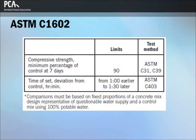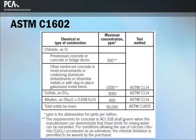Water of questionable suitability, including non-potable water or water from concrete production operations, can be used in concrete if it is qualified by requirements shown in the table. These requirements evaluate the impact of the questionable water on strength and setting time of concrete. ASTM C1602 includes optional limits for chemistry and total solids content by mass in the combined mixing water, which must be invoked in project specifications or purchase orders. The standard also establishes minimum testing frequencies to qualify mixing water, with more frequent testing required when water has a higher concentration of solids or higher density.